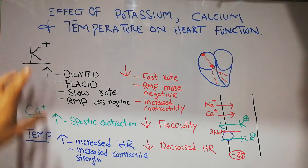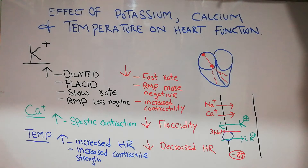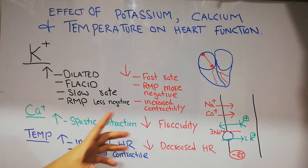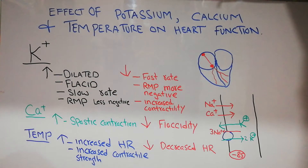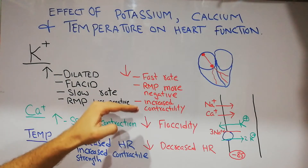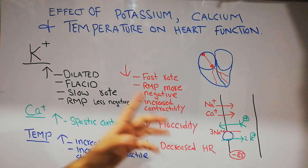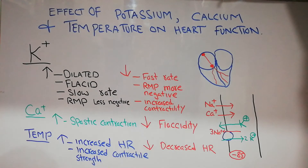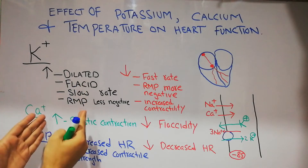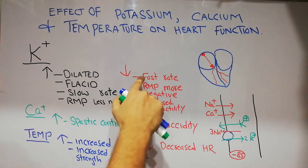First, we will discuss potassium. If the potassium value in the blood is increased, it will lead to a dilated, flaccid heart, and the resting membrane potential will be less negative. If the potassium level in the blood is decreased, the heart rate will be fast, the resting membrane potential will be more negative, and contractility will be increased.